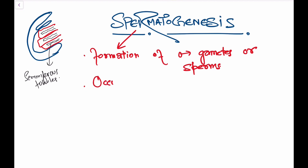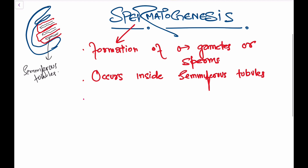If asked which cell inside the seminiferous tubules is responsible for spermatogenesis, the answer is a cell called spermatogonia. Spermatogenesis occurs from cells called spermatogonia.